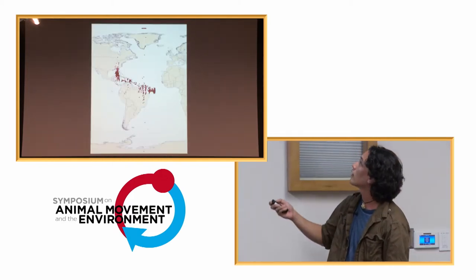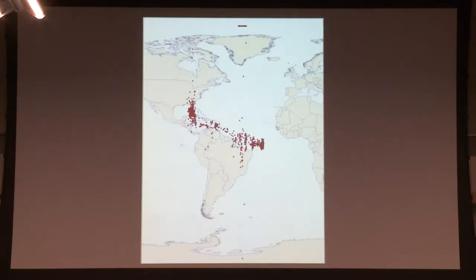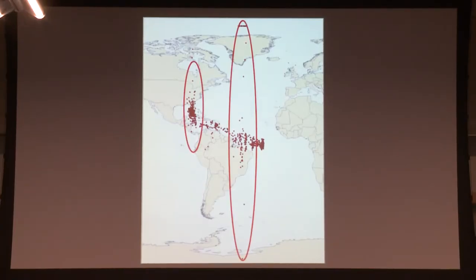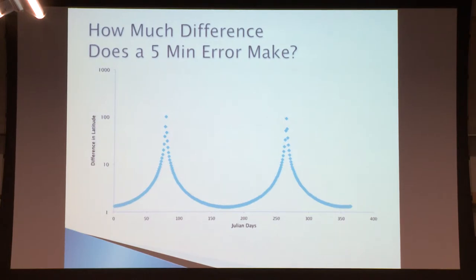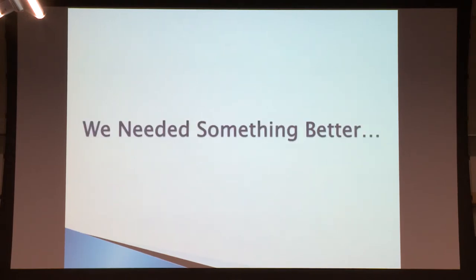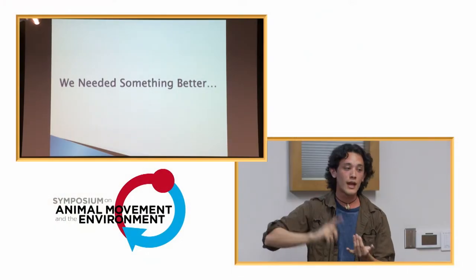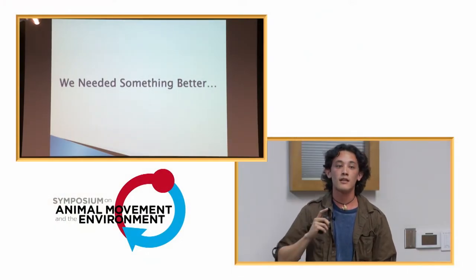Looking at the raw data from one of the data loggers, you can see really large ranges in points — those occur around the equinox. If we plot the difference in latitude between consecutive points, we get giant spikes at the spring and fall equinox respectively. And if we look at how much latitudinal error we get with a simple five-minute margin of error and plot against Julian days, it just spikes right there. We needed something better — data we could obtain more easily and that was far more accurate.